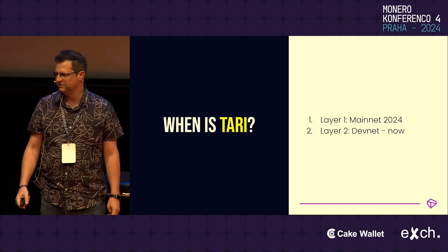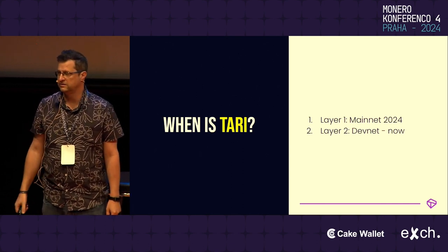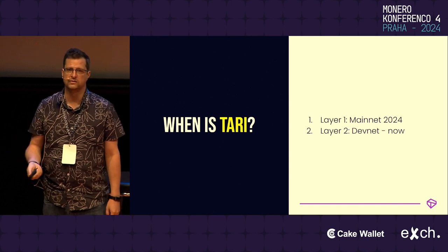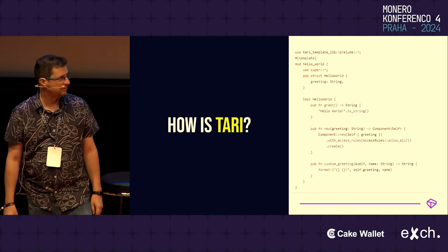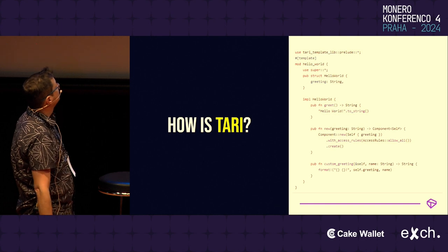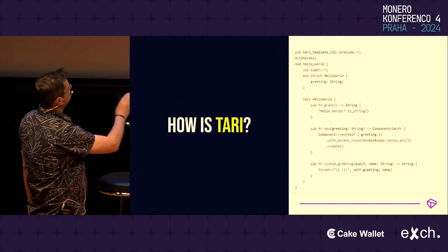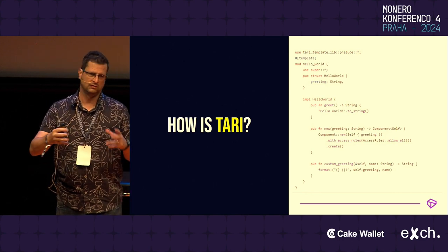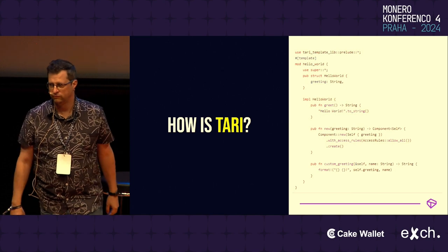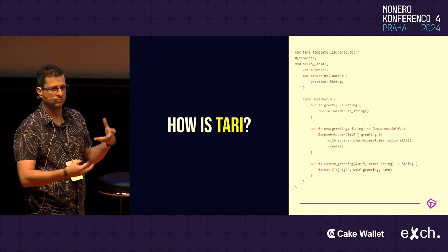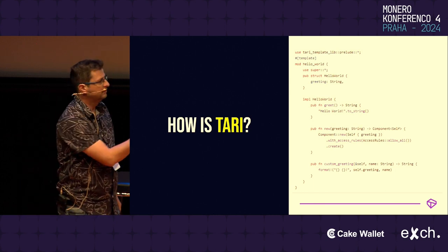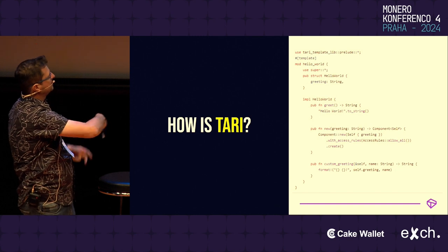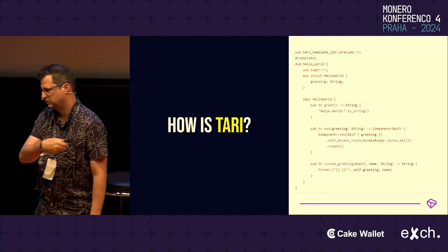When is Tari? That's the big question. As you've seen on the t-shirts, layer one is mainnet sometime in 2024. We've already got a DevNet up and running for layer two — if you've got a smart contract, you can deploy it to DevNet now. So how is Tari? This is a hello world example — this is what your Tari contract would look like. It's written in Rust, gets compiled to WASM, and gets executed on a WASM virtual machine. All the nodes run the code and agree on the output, and if they all agree, we commit it to the blockchain. The new method is where you instantiate the component.